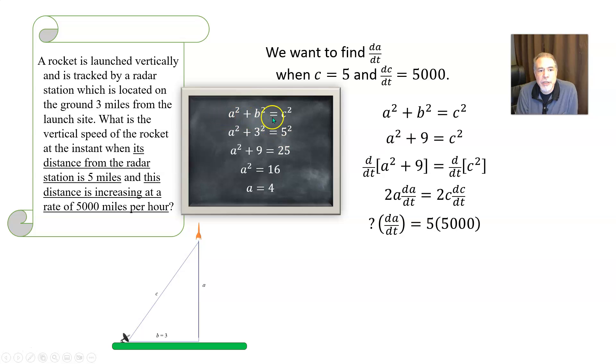So if we go back to a squared plus b squared equals c squared, and remember b was just three, and now we're talking about at the specific instant when c is five. Then we can say a squared plus three squared equals five squared. So a squared plus nine equals 25. Subtract nine on both sides, you get a squared equals 16. So a must be the positive square root of 16, namely four. Now we know what to put in for a. It's four.